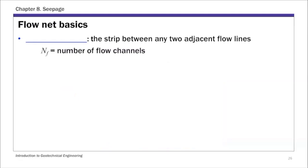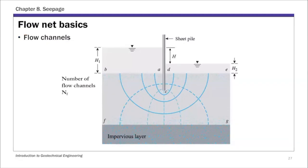There are some additional definitions. The first is called flow channels — a strip between any two adjacent flow lines. The channel bounded by two adjacent flow lines is a flow channel. For this flow net, we have four flow channels, so the number of flow channels, Nf, equals four.